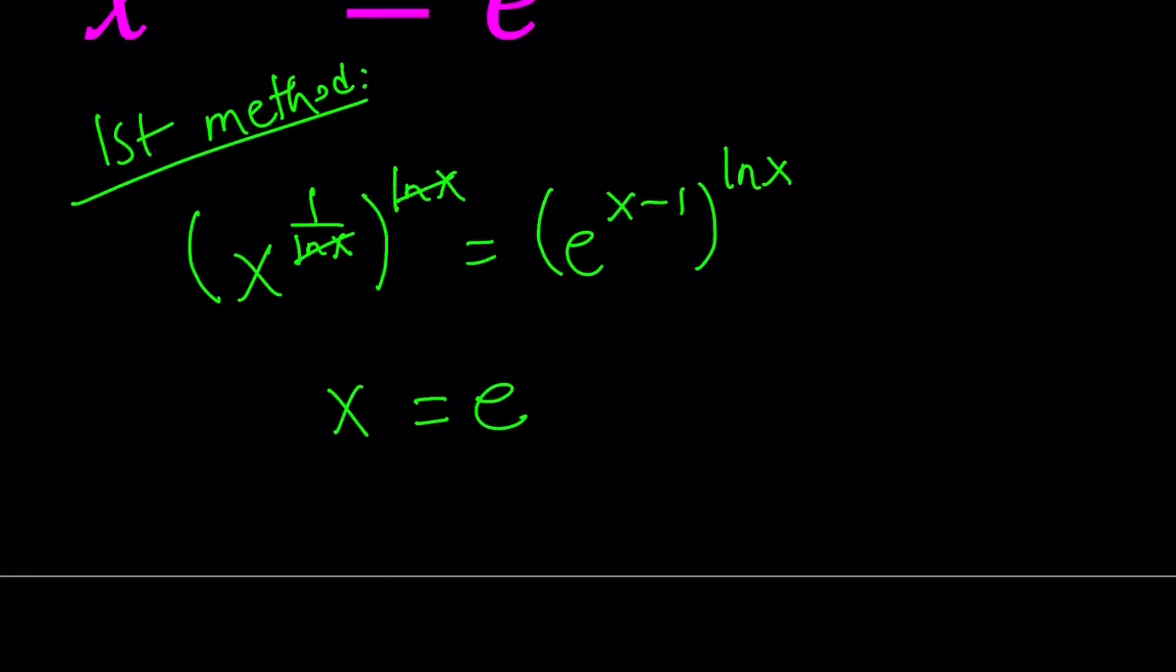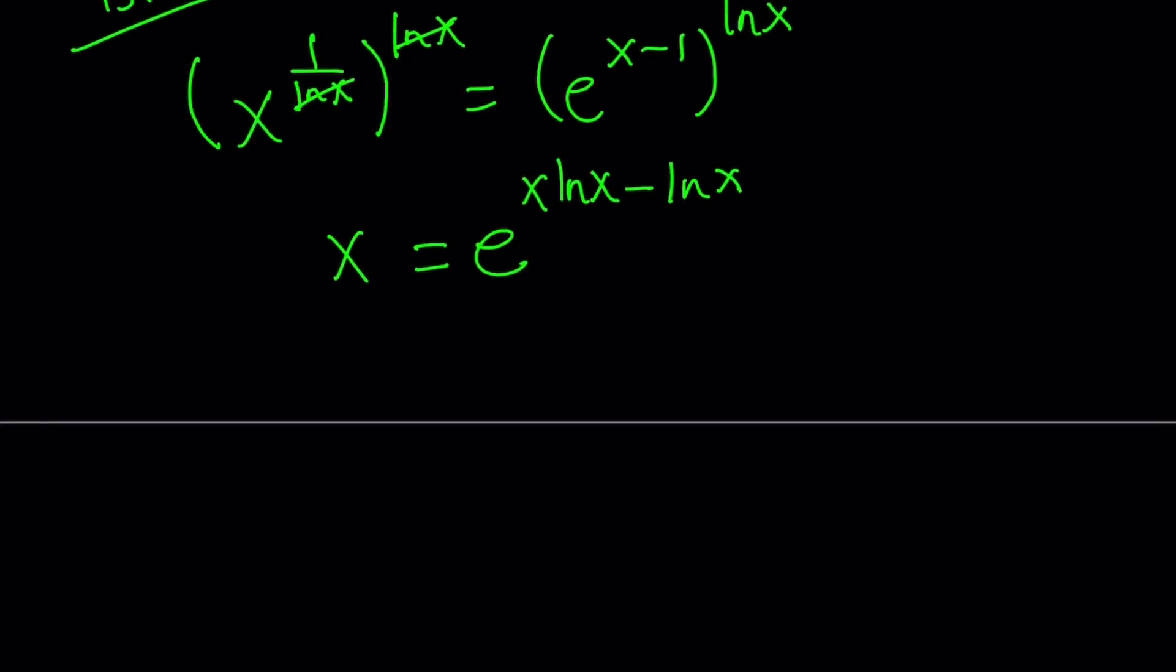Since ln x is going to be multiplied by x minus 1, I can go ahead and distribute it and write this as e to the power x ln x minus ln x. Now the subtraction of exponents just indicates that this is division. So I can write this as x equals e to the power x ln x divided by e to the power ln x.